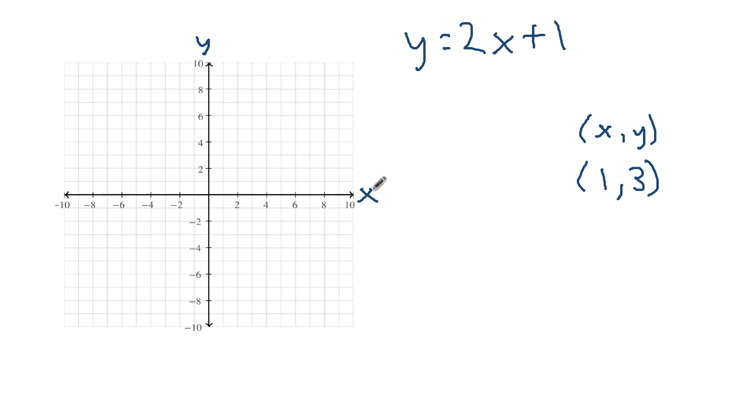So for x, positive 1 means we need to go to the right one, and then for y, positive 3 means we need to go up 3. 1, 2, 3. So this point right here is the point (1,3).